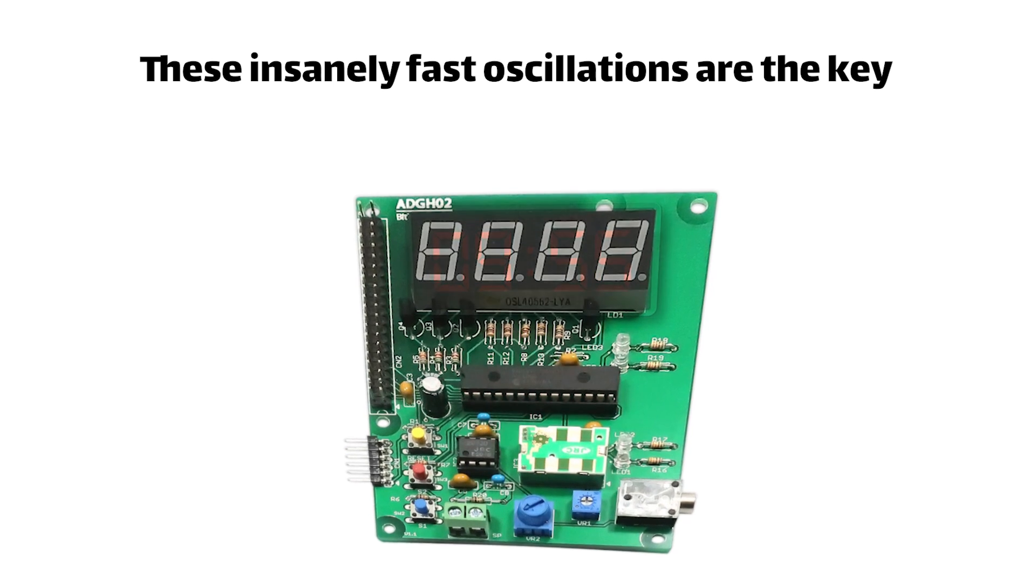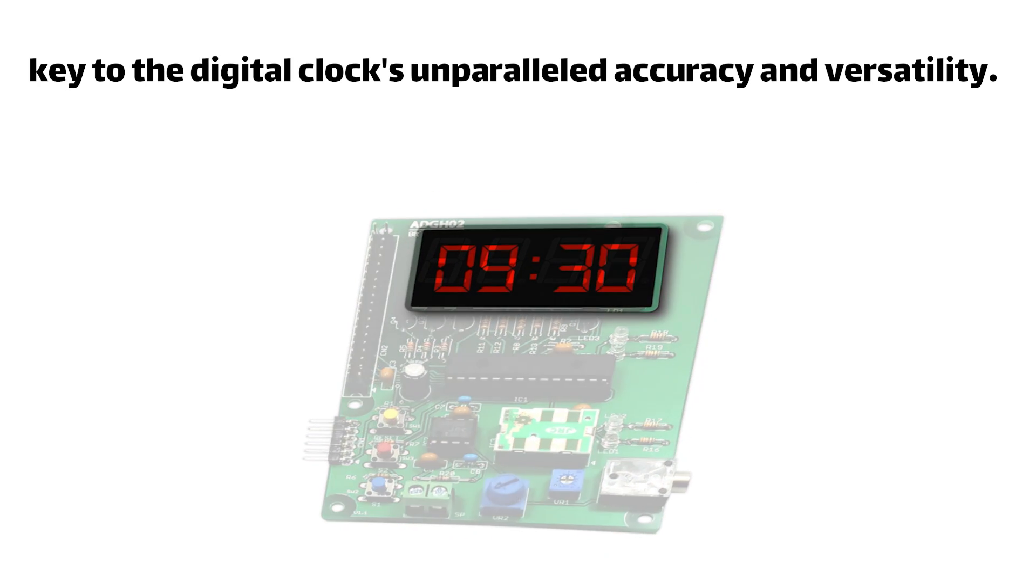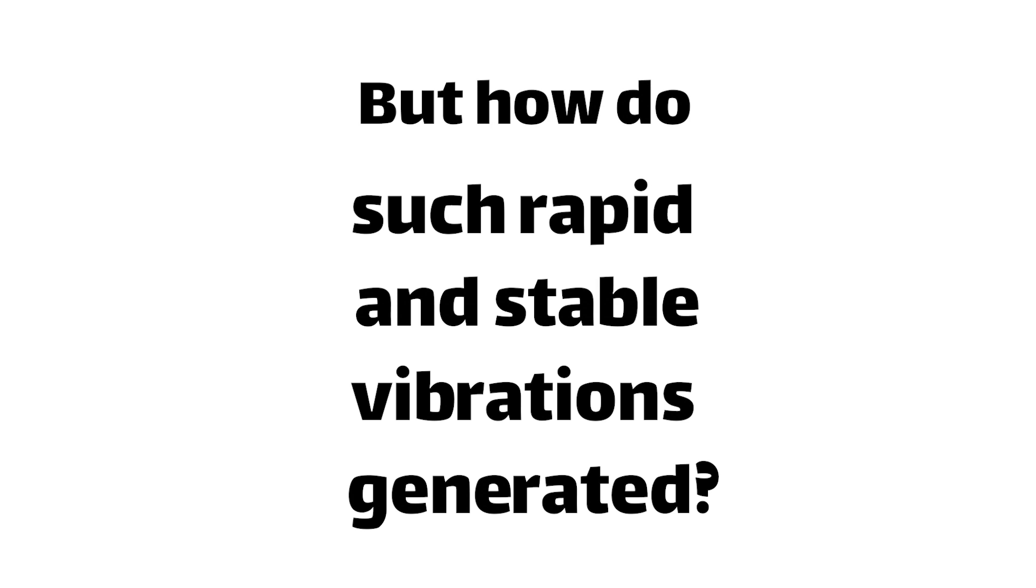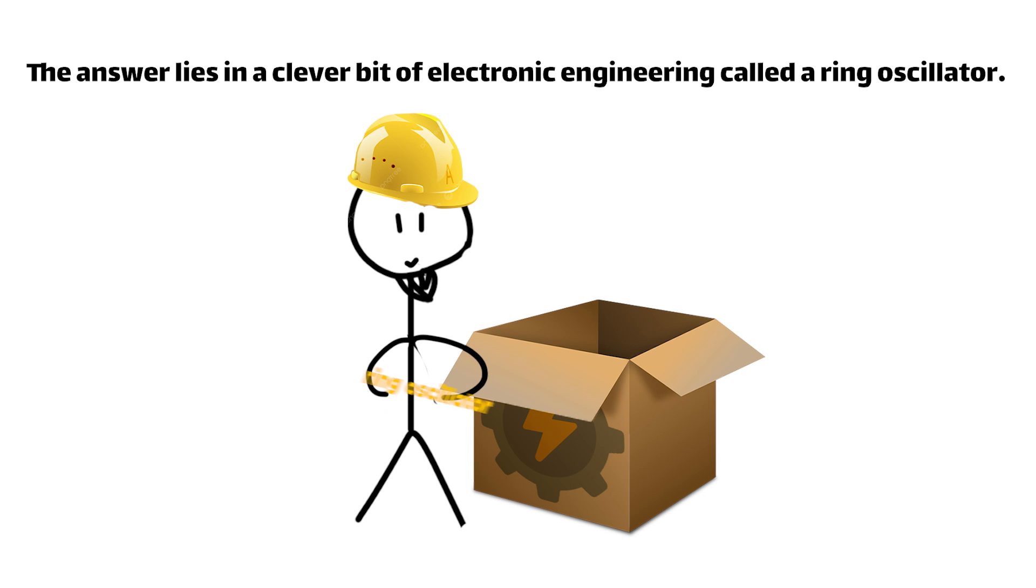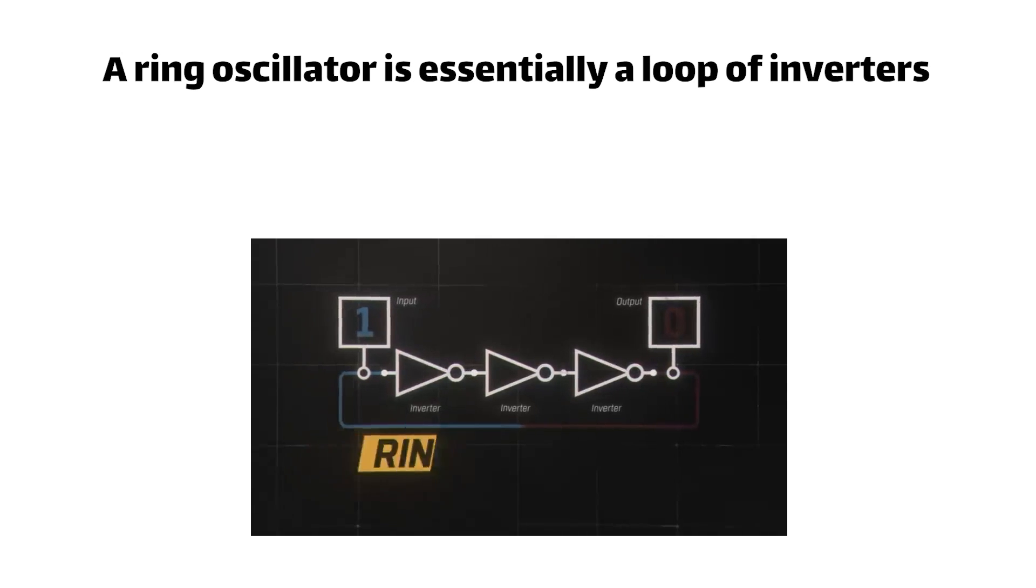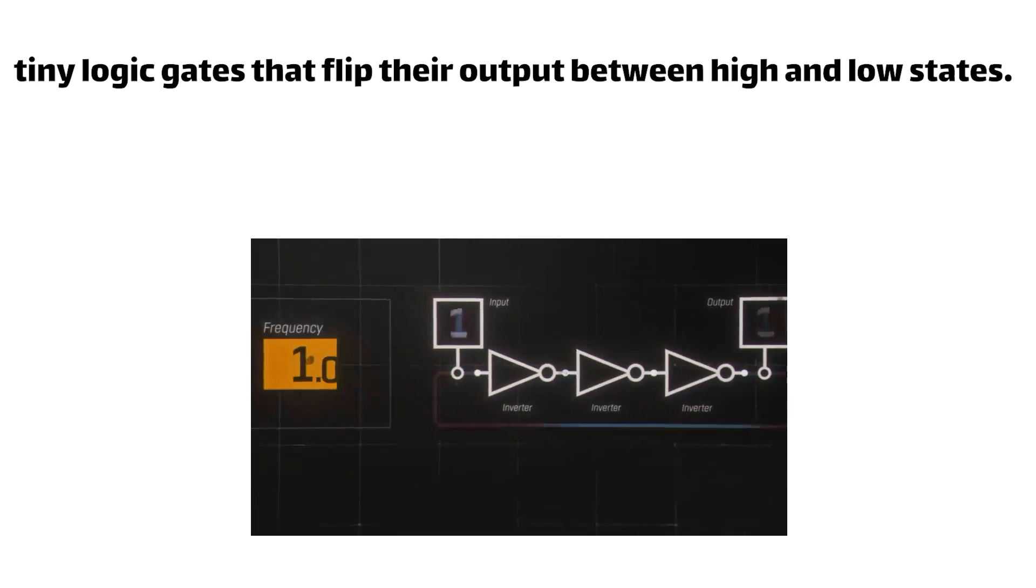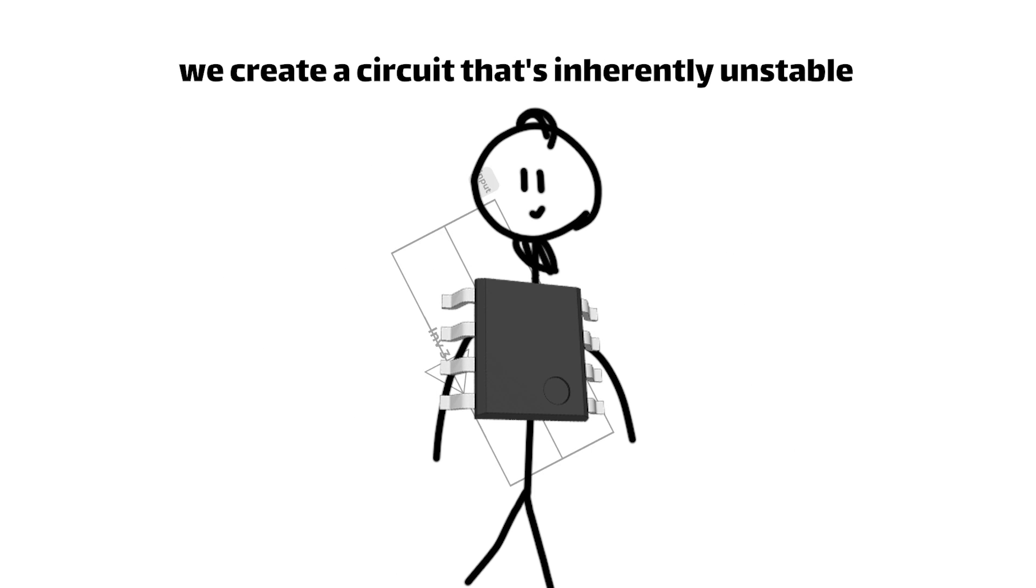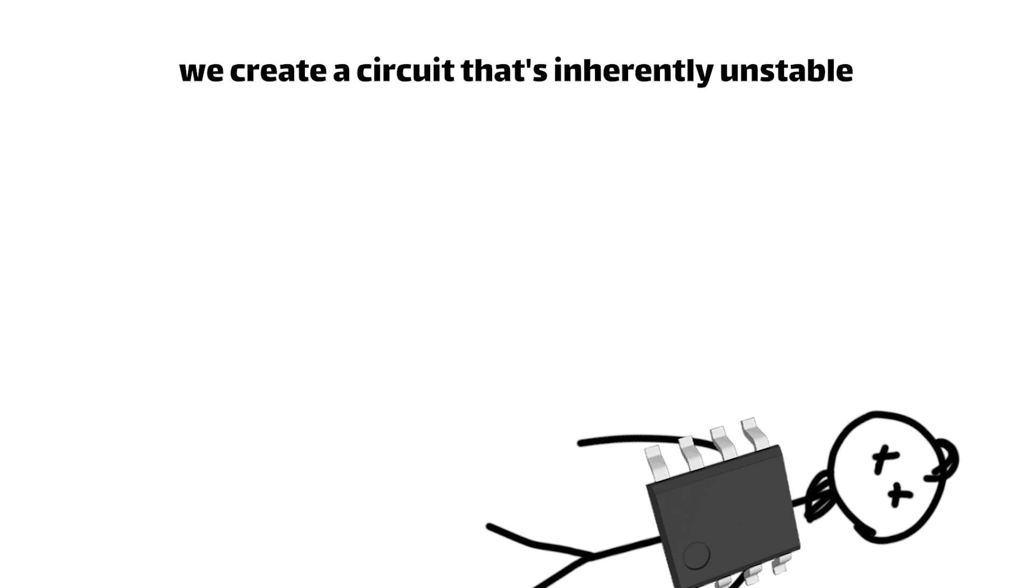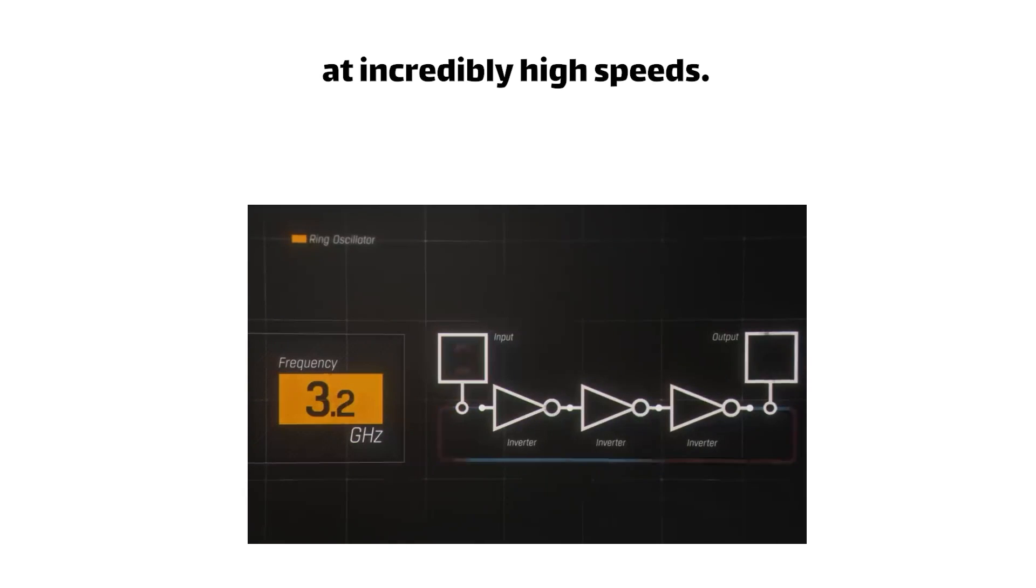These insanely fast oscillations are the key to the digital clock's unparalleled accuracy and versatility. But how are such rapid and stable vibrations generated? The answer lies in a clever bit of electronic engineering called a ring oscillator. A ring oscillator is essentially a loop of inverters, tiny logic gates that flip their output between high and low states. By connecting an odd number of inverters in a ring, we create a circuit that's inherently unstable, with the output constantly flip-flopping back and forth at an incredibly high speed.